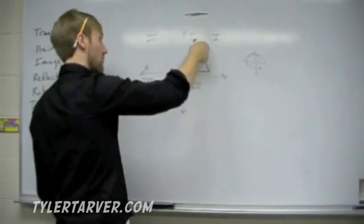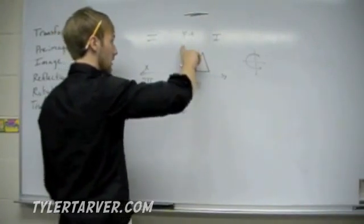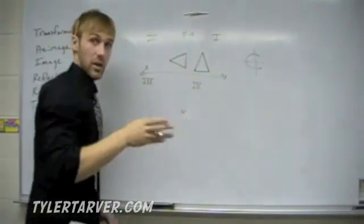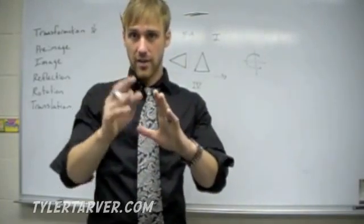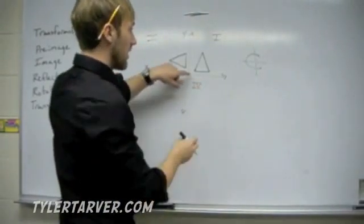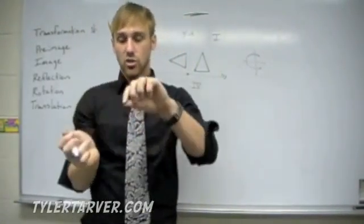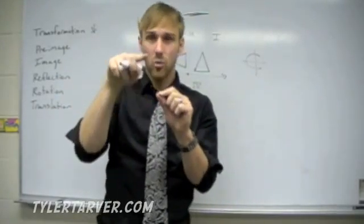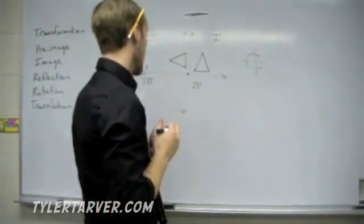Say we want to rotate the triangle 90 degrees. We always go in the order of that C, so we go from first to second quadrant. A good way to do this is to draw the shape on your coordinate plane, put your pencil at the origin — zero, zero — and then turn the piece of paper 90 degrees. You'll be able to see what the shape looks like. Count the coordinates, turn it back, and draw them in.